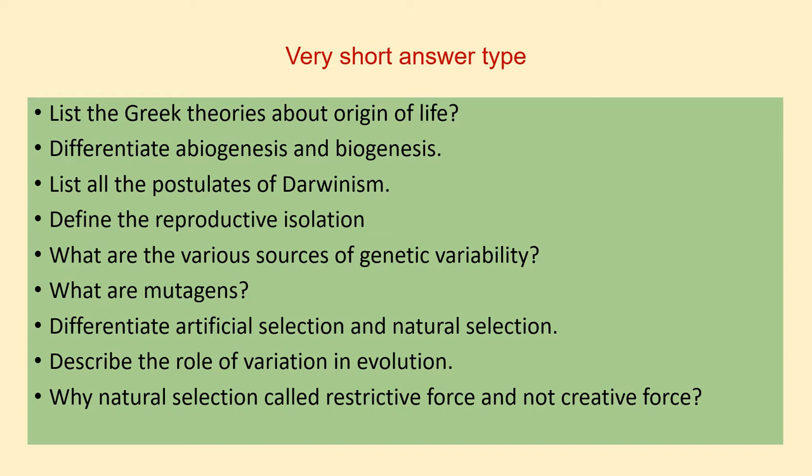The first question is: list the Greek theories about origin of life. You just write the names of the theories, not discuss the complete theory. The second question is: differentiate abiogenesis and biogenesis. Write down two to three differences between abiogenesis and biogenesis.